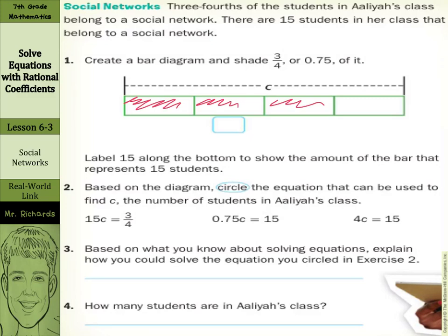So we have three-fourths shaded in. Now it says label 15 along the bottom to show the amount of the bar that represents 15 students. Based on the diagram, circle the equation that can be used to find C, the number of students in Aaliyah's class.